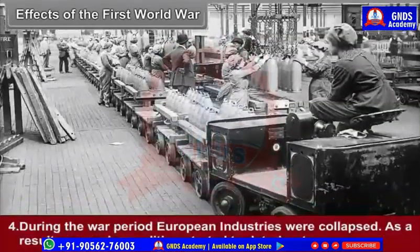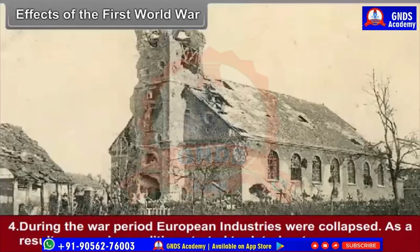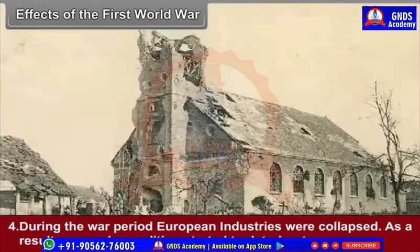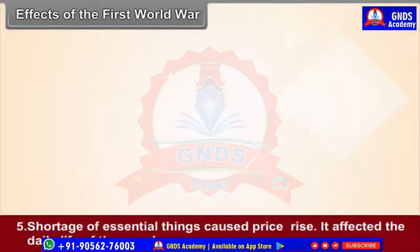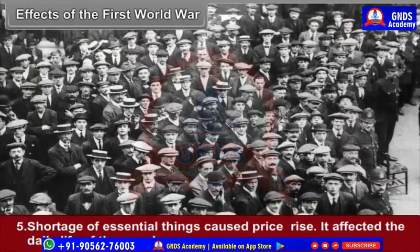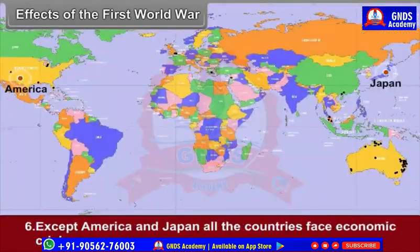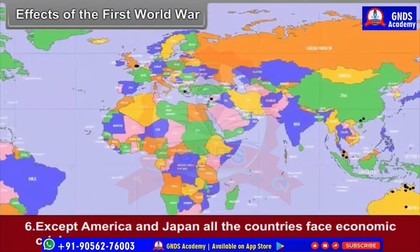Fourth, during the war period, European industries collapsed. As a result, economic conditions started to deteriorate. Fifth, shortage of essential things caused price rises, which affected the daily life of the people. Sixth, except America and Japan, all the countries faced economic crisis.